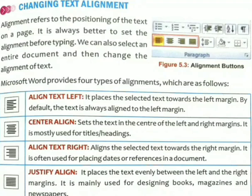Justify align places the text evenly between the left and right margin. It is mainly used for designing books, magazines, and newspapers. Justify align makes the left and right text equally or evenly aligned, as we can see in books, magazines, and newspapers.